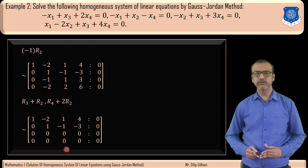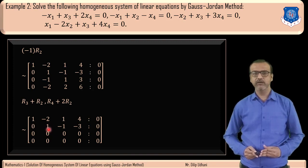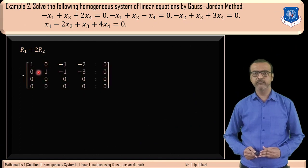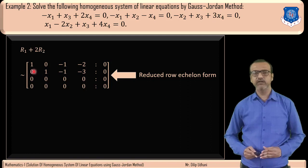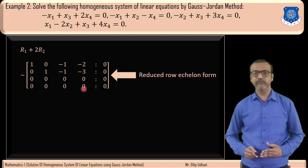Now we reduce to reduced row echelon form. Leading 1s are present in column 1 and column 2, but absent in columns 3 and 4. So variables x3 and x4 are free variables, while x1 and x2 are leading variables. We make -2 above the leading 1 in row 2 equal to zero by applying R1 + 2R2, giving row 1: [1, 0, -1, -2 | 0]. This matrix is now in reduced row echelon form.